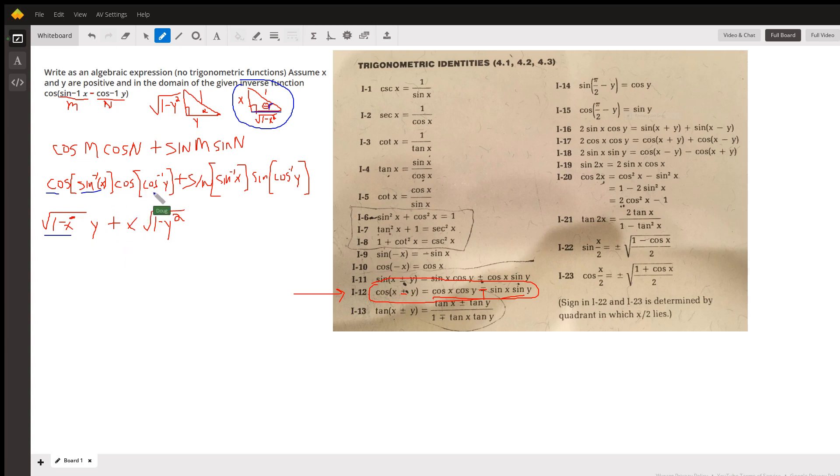The cosine of the angle that has a sine of Y is Y. And similarly over here, the sine of an angle that has a sine of X is X. But the sine of an angle that has a cosine of Y,